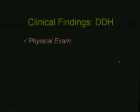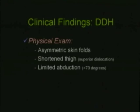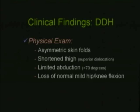Evaluation of the hip clinically is part of the routine physical examination of a newborn and during the first year of life at periodic checkups. Doctors are looking for asymmetry of the skin folds, shortening of the thigh — particularly in babies with superior dislocation — and limited abduction of the hip, usually less than 70 degrees when there is concern. In the normal baby, there's about a 10-degree flexion at the hip and knee; in babies with DDH, there may be loss of this normal flexion.